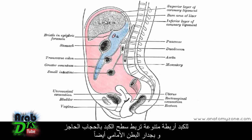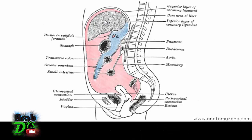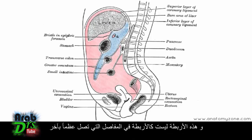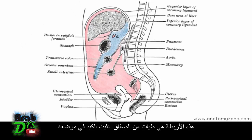The liver has various ligaments which attach from its surface to the diaphragm and also to the anterior abdominal wall. These ligaments aren't like ligaments in joints which connect bones to bones — these ligaments are folds of peritoneum and they anchor the liver into place.